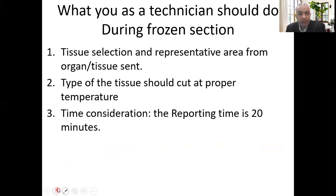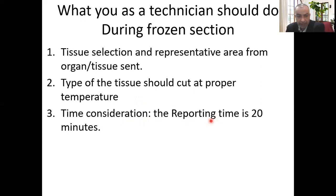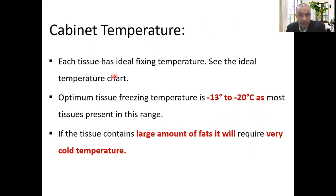What you as a technician should do during frozen section: number one, tissue selection — choose a representative area from the organ or specimen to prepare the sample. The type of tissue should be cut at the proper temperature. Follow the chart of optimum cutting temperature. Time consideration: the reporting time is 20 minutes. The optimum tissue freezing temperature for most tissues ranges from minus 13 to minus 20 degrees Celsius.